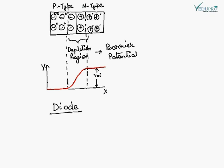A diode is a very useful electronic device, and a single P-N junction is nothing but a diode. The symbol of a diode is shown. The terminal of a diode with P-type semiconductor is known as the anode, and the terminal with N-type semiconductor is called the cathode.